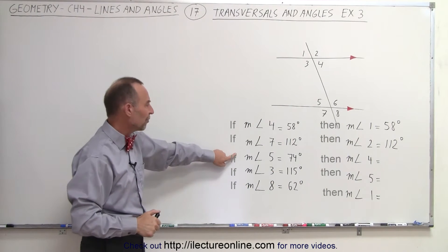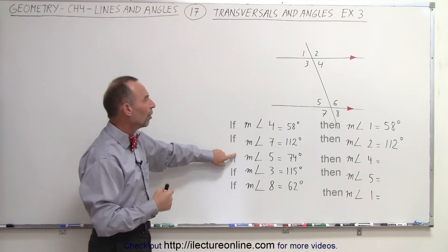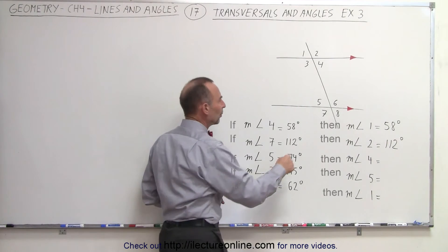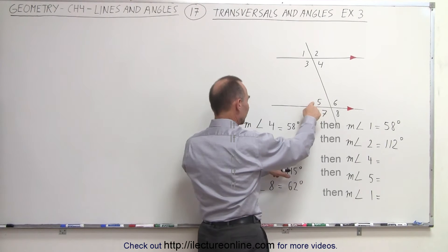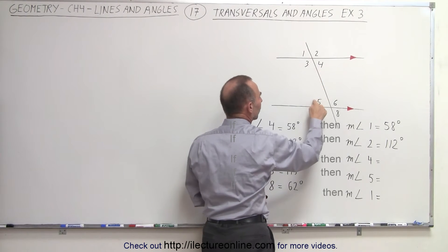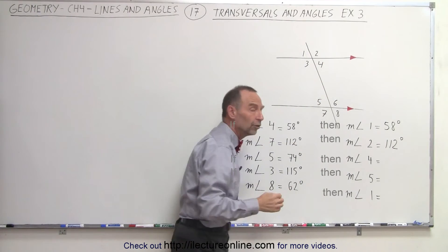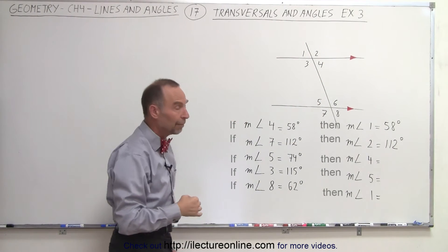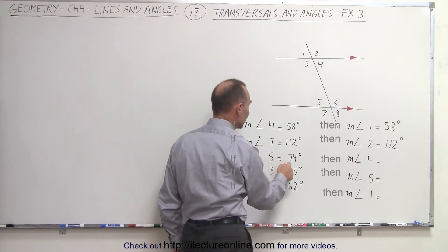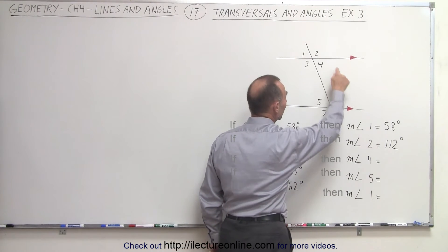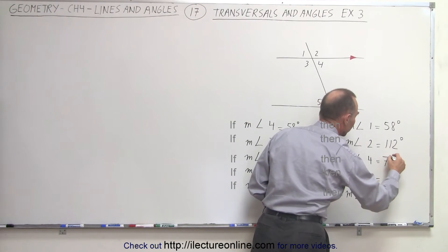Next, we'll look at the measure of angle five being 74 degrees. What is the measure of angle four? These are what we call alternate interior angles, and by the rule, they must be the same. So if the measure of angle five is 74 degrees, then the measure of angle four must also be 74 degrees.